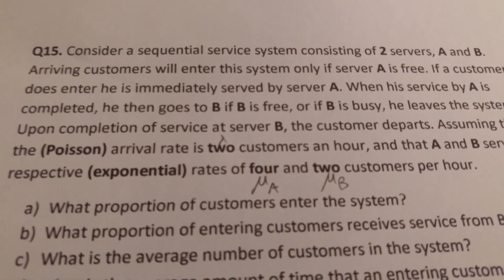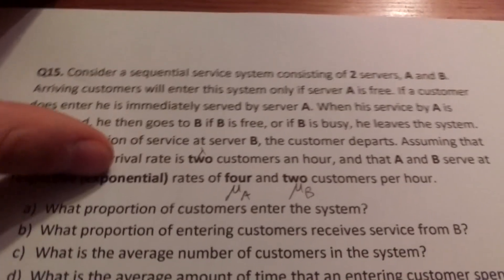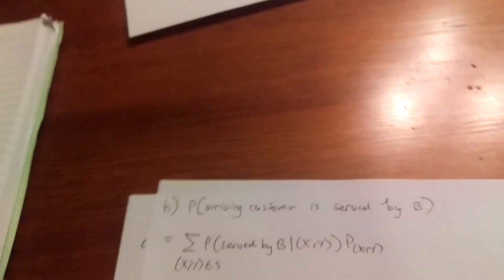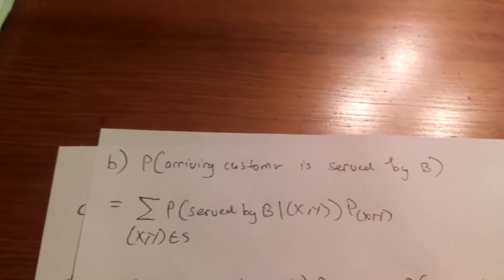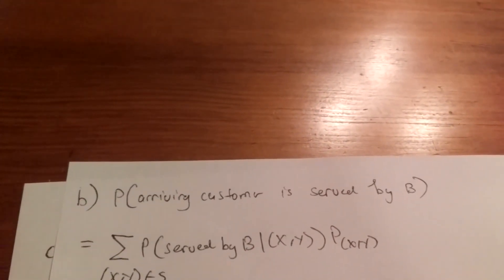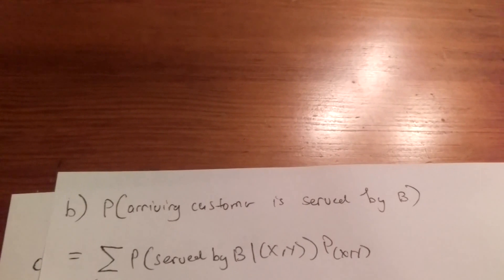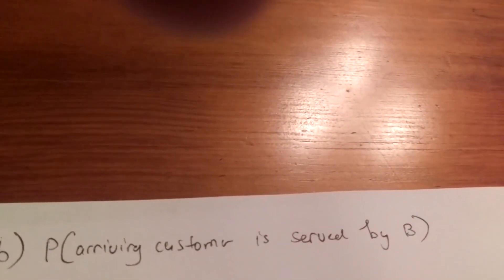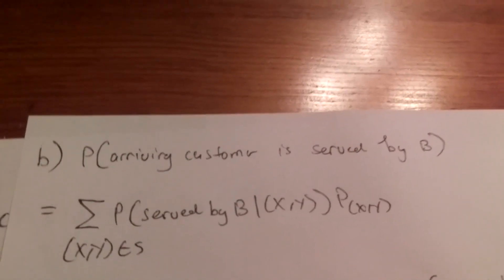Part B asks what proportion of entering customers receive service from B. Not every customer will receive service from B — some won't enter the system at all, and some will be served by A but leave because B is full. We can use Bayes' rule, looking at the probability that an arriving customer is served by B as a sum over all states of the conditional probability of being served by B given the system is in state (x,y), times the probability of that state.